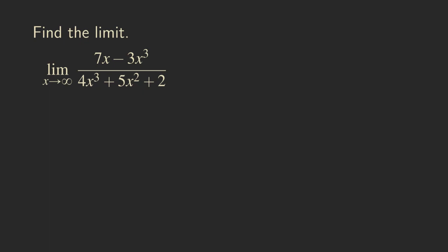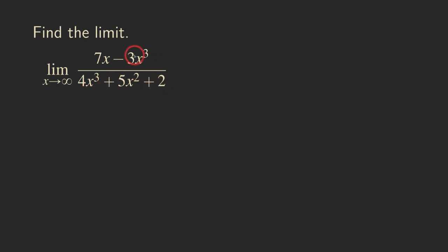Hello everyone, it's Wilson here. Today I want to continue to talk about limits at infinity. So if you look at this rational function here, the degree for the numerator is 3, and the degree for the denominator is also 3. So the top and the bottom have the same degree, and we want to see what this function is approaching when x is approaching infinity.